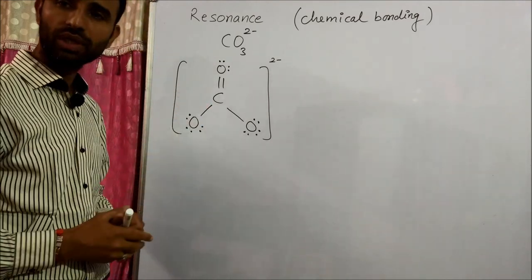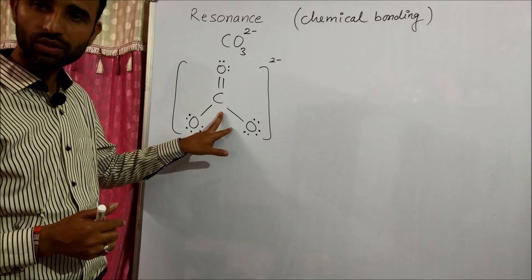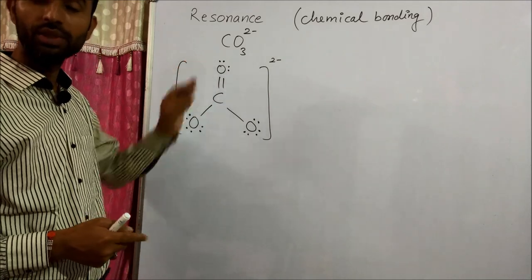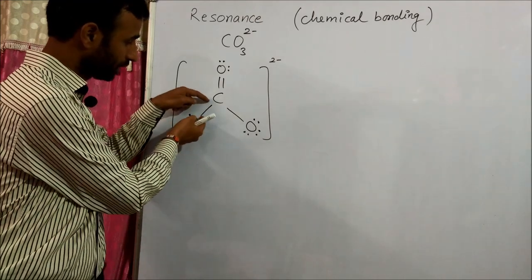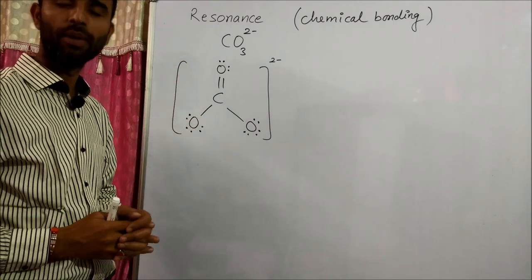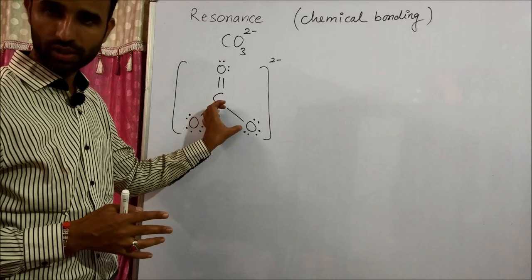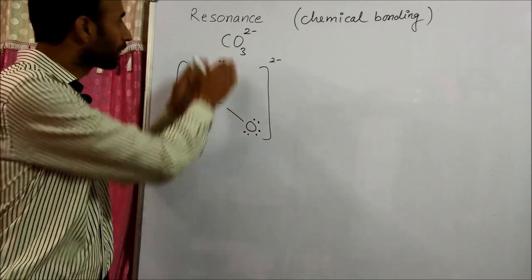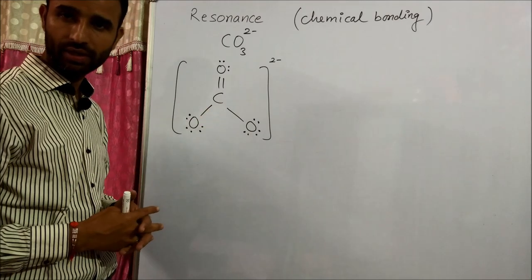But what is this structure? There is one double bond and two single bonds. You know, a single bond is longer than a double bond. That means in carbonate, there should be 2–3 different bond lengths — single bond longer, double bond shorter. But experimentally, in carbonate, all C–O bonds are equal in length. That means this Lewis structure that we drew for carbonate cannot explain its properties.